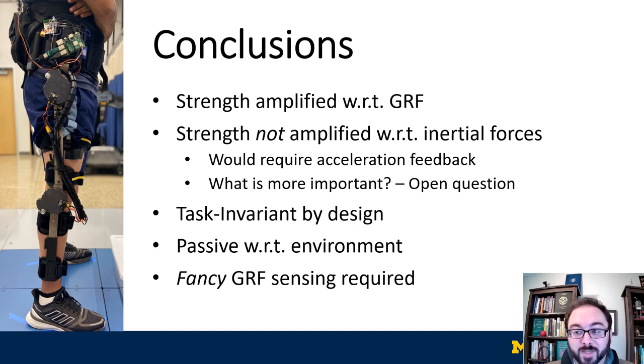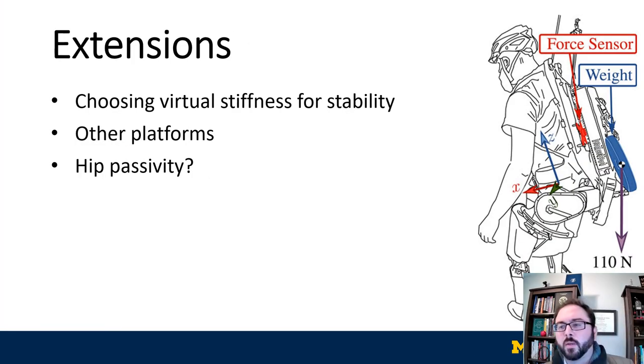A major implementation caveat is that the controller requires a ground reaction force sensor that measures all three sagittal plane components of force and torque, which is hard to find. To extend this paradigm, we hope to investigate the choice of virtual stiffness for achieving robust stability with the human in various environments, as well as the passivity properties of the hip motion to hip constraint torque port. Our amplification approach may also be applicable to other architectures than considered here.